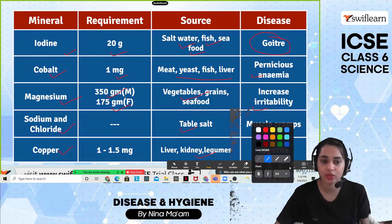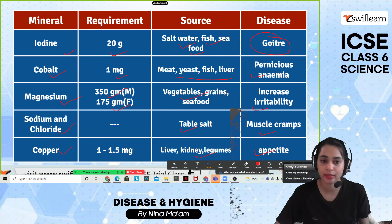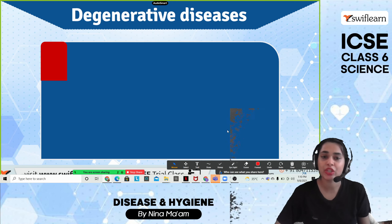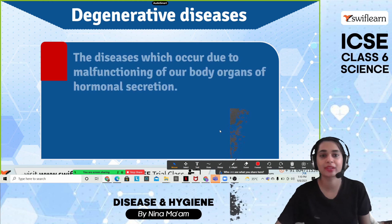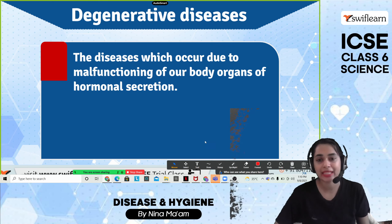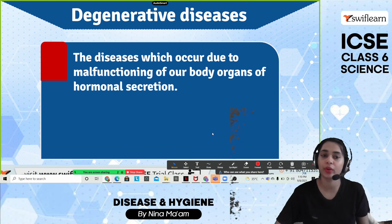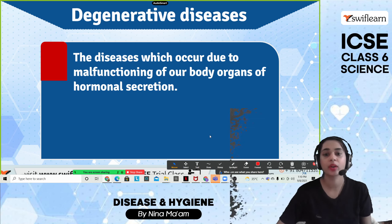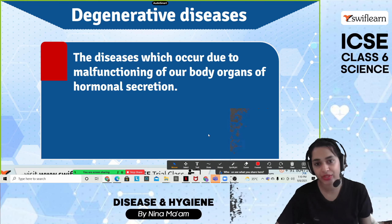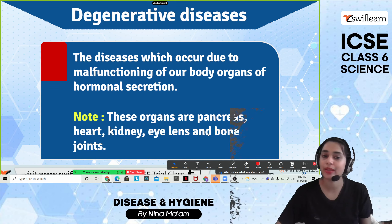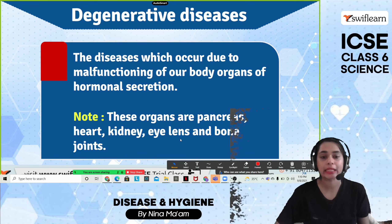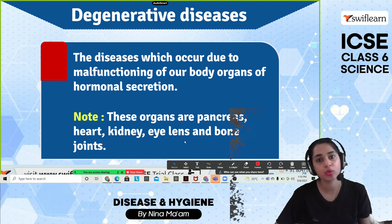Now, degenerative diseases. These are diseases which occur due to the malfunctioning of body organs or hormonal secretion. The organs involved include the pancreas, heart, kidneys, and bone joints.